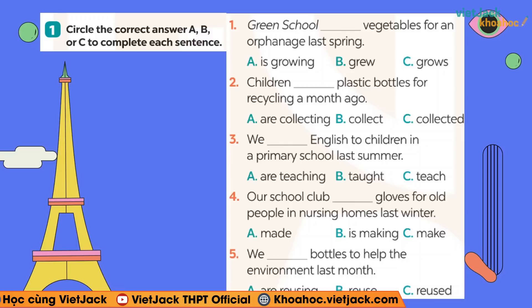Hôm nay chúng ta học thì quá khứ đơn, chắc chắn những bài tập của mình sẽ là thì quá khứ đơn. Tuy nhiên, cô giao thêm một nhiệm vụ: lấy gạch chân cho cô những cái cụm thời gian để thể hiện đây là thì quá khứ đơn. Và đừng quên quyển sách 360 động từ bất quy tắc ở bên cạnh mình để tra xem cái động từ này là có quy tắc hay là bất quy tắc, chỉ cần thêm đuôi -ed hay không.